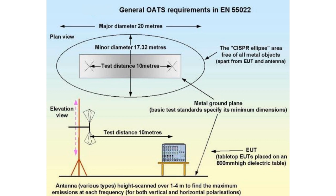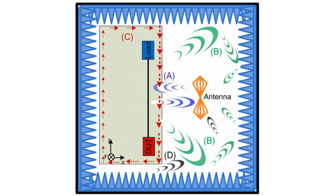Radiated emissions measurements involve the measurement of EUT emissions in an open area test site, or in an absorber lined shielded enclosure.